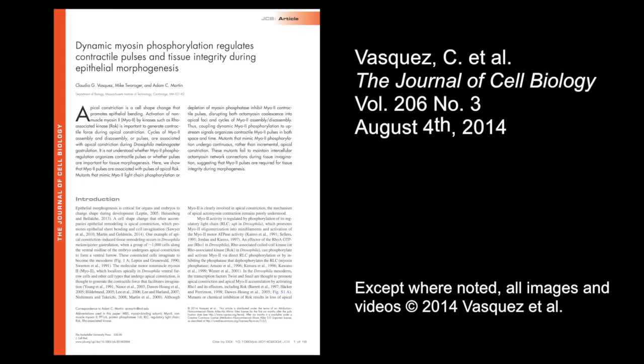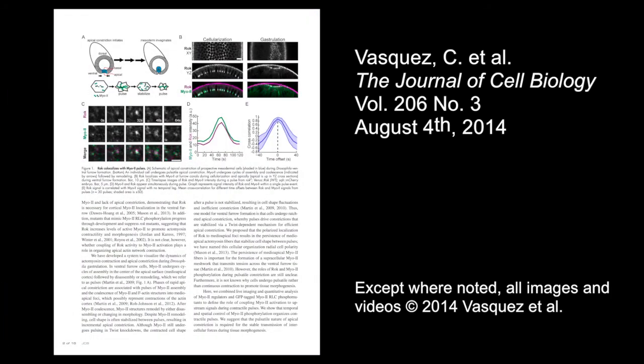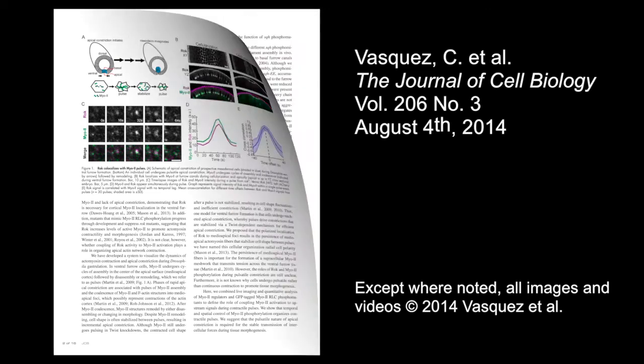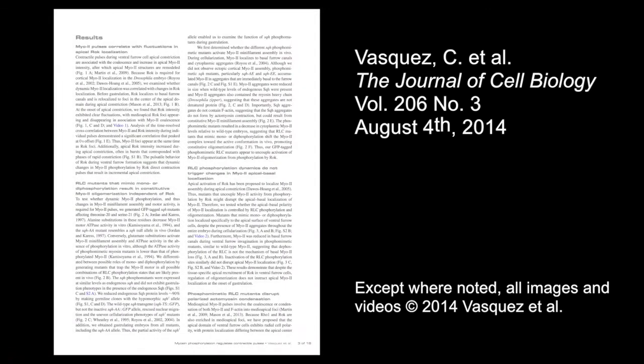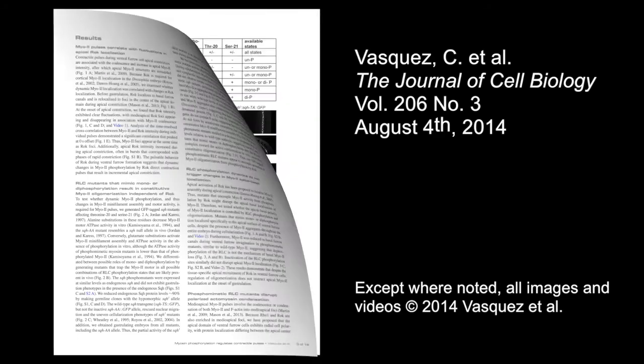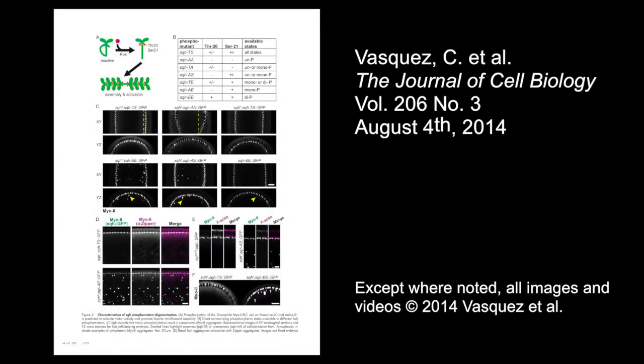You can learn more about how dynamic myosin phosphorylation regulates contractile pulses and tissue integrity during epithelial morphogenesis in the paper by Vasquez et al., published in the August 4th, 2014 issue of the Journal of Cell Biology.